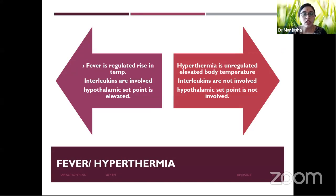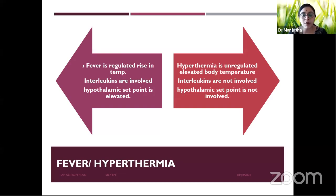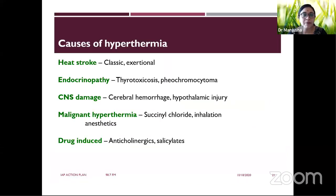To summarize: in fever, cytokines are involved and the hypothalamus is involved. In hyperthermia or hyperpyrexia, there is no hypothalamic involvement — it is either increased heat production or decreased heat loss.